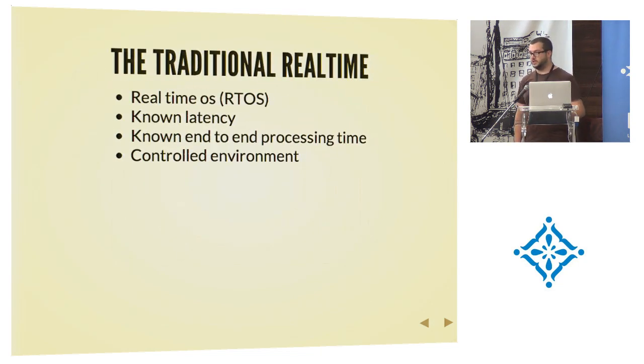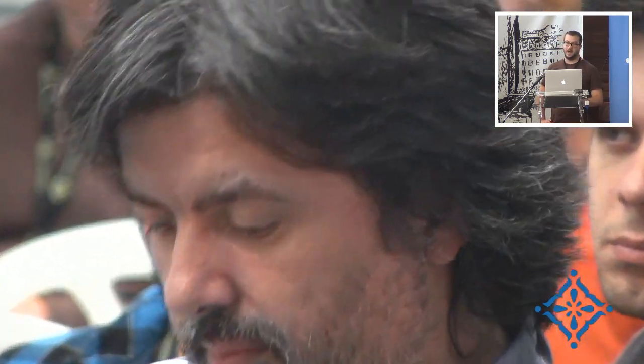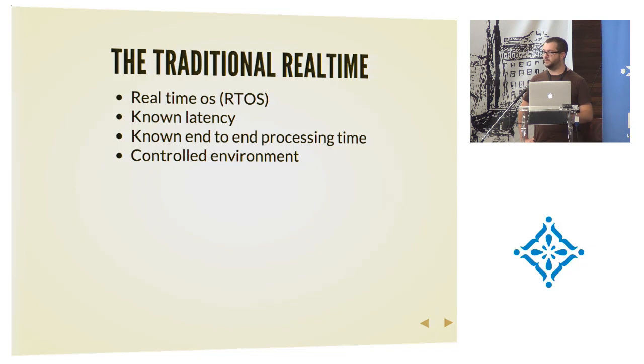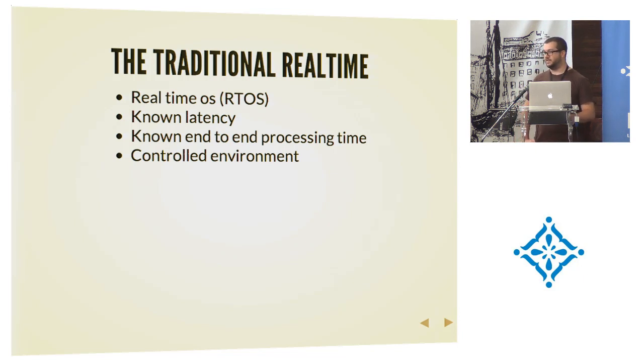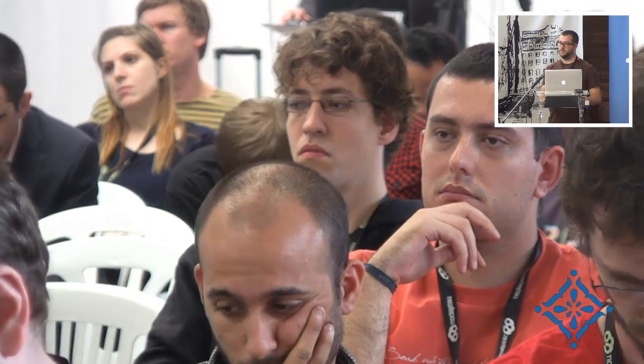The traditional definition looks something like this: you have a real-time operating system that can schedule stuff at exactly known latencies and known processing times — it takes x milliseconds to execute this function. The environment is usually controlled, like a robot welding cars, or a really high-end trade system with a super optimized non-TCP connection where you know exactly how long a packet takes. Trading firms are actually putting their racks next to the exchange's racks to get minimum latency. That's as close as you can get to real-time.